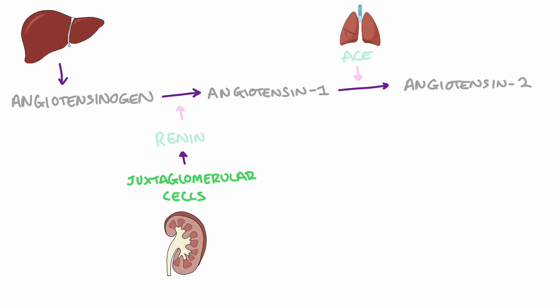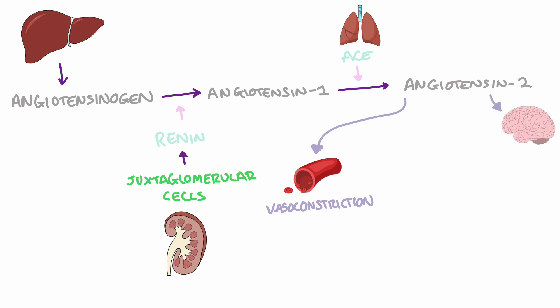Angiotensin 2 has a whole range of effects, all of which contribute towards raising the glomerular filtration rate. In blood vessels, angiotensin receptor activation triggers the constriction of smooth muscles of arterioles via phospholipase C activation, which causes blood pressure to increase. In the brain, there is stimulation of the posterior pituitary gland which causes the release of antidiuretic hormone. Antidiuretic hormone increases the amount of water being reabsorbed in the collecting ducts of the kidney, thus raising blood volume and consequently blood pressure. Not only this, angiotensin 2 also raises sympathetic activity.